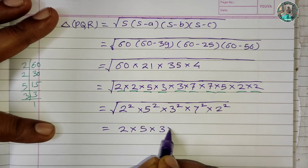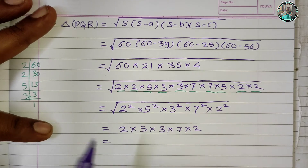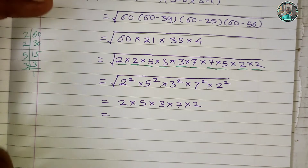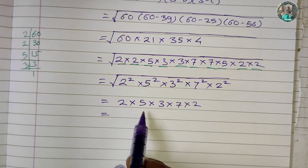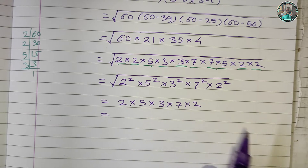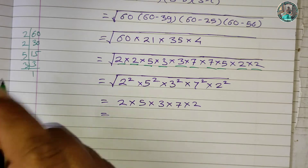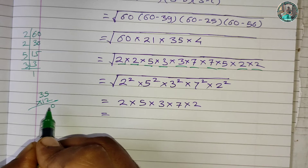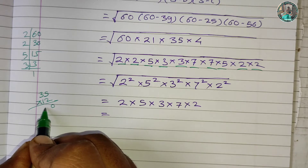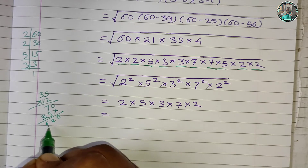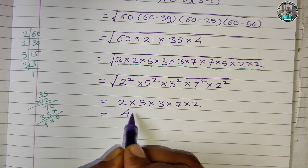Simplifying the square root: 2 into 5 into 3 into 7 into 2 — coming out from under the square root. This gives 7 into 25 into 12, which is 35 into 12, equaling 420. The area of triangle PQR is 420 square meters.